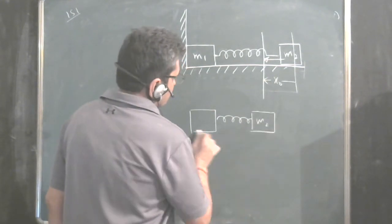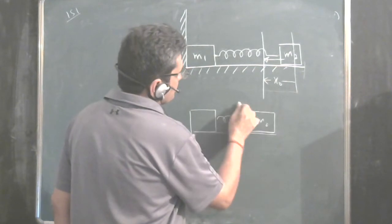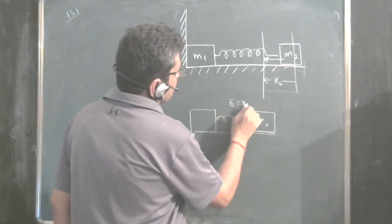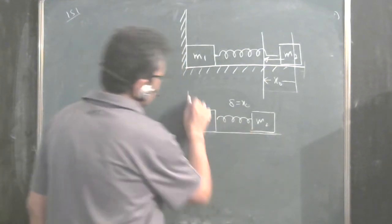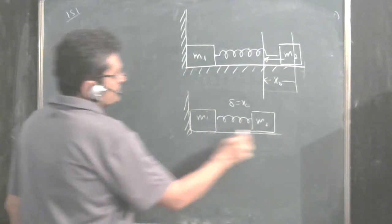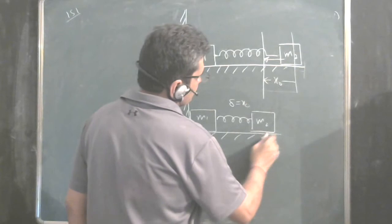M2, and there is a compression in the spring. So delta is x0. M1 is resting against the wall so it will not get affected. Now once you have released it.